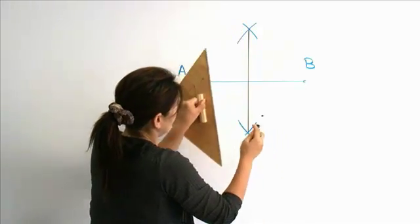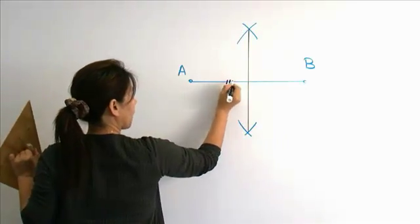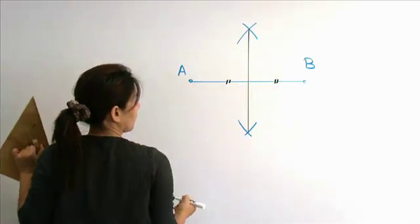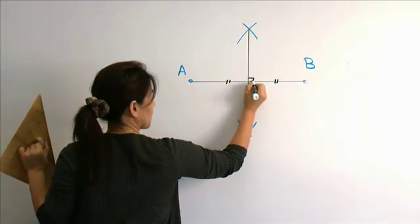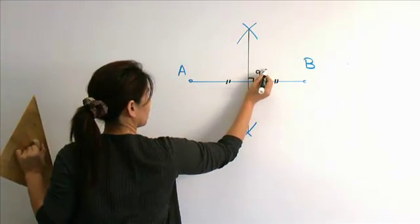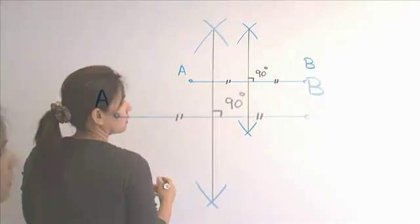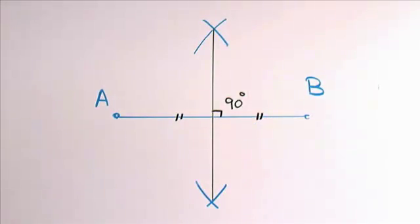This straight line is the midpoint of the line segment AB and it also intersects at 90 degrees with the line AB. This line is called the perpendicular bisector of the line segment AB.